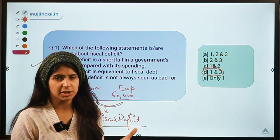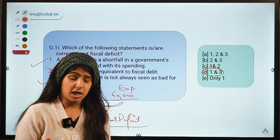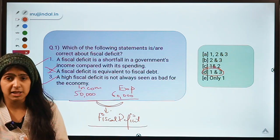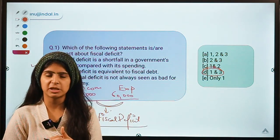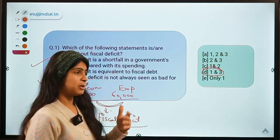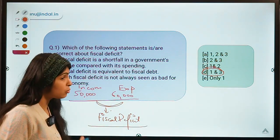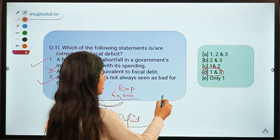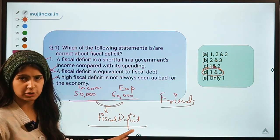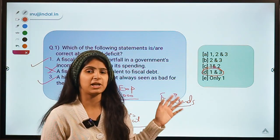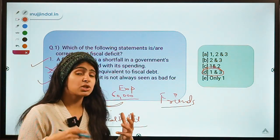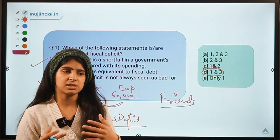Whenever there is a fiscal deficit, whenever your expenditures exceed your income, you have to arrange for it. If your expenses are more than your earnings, you can go to your parents and ask for money — but then they will ask where you spent it. If you don't want to tell them, you'll go to your friends and ask them to lend you 10,000 rupees.